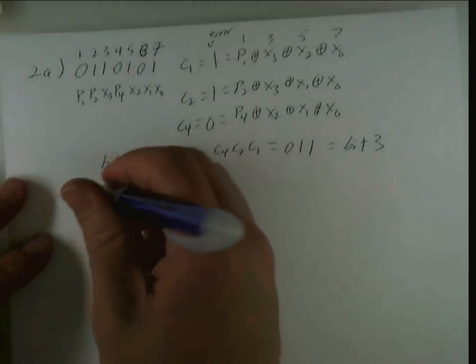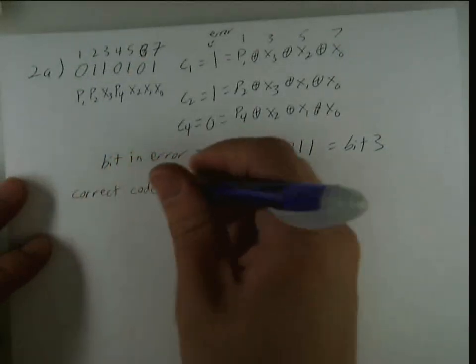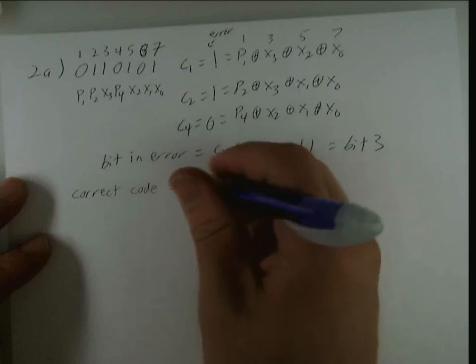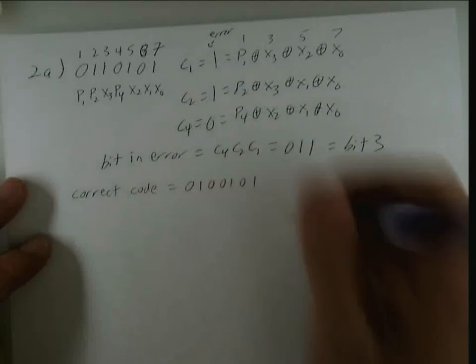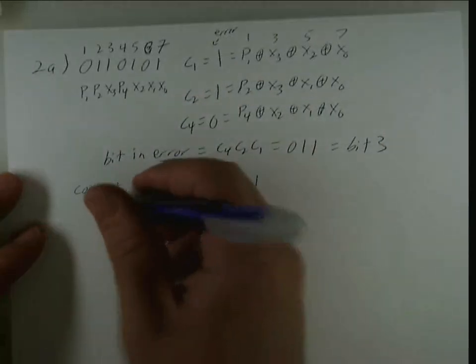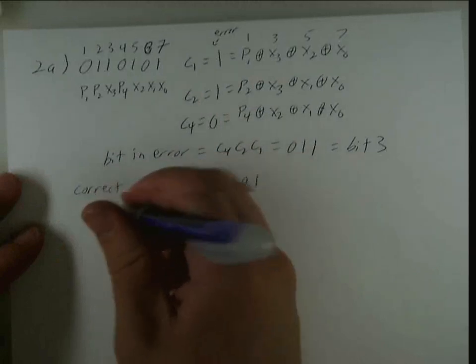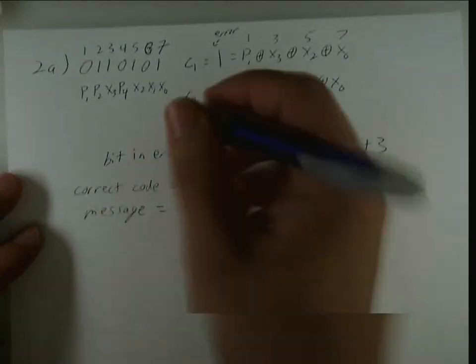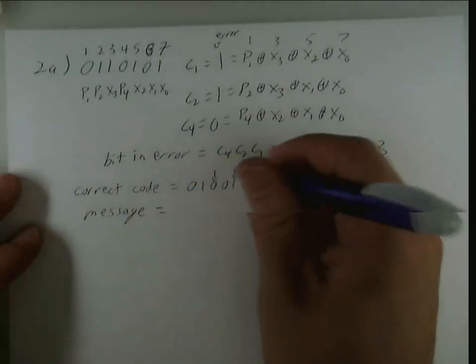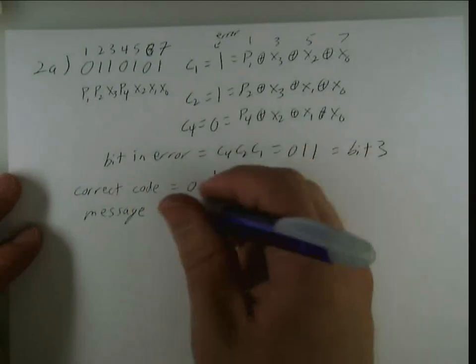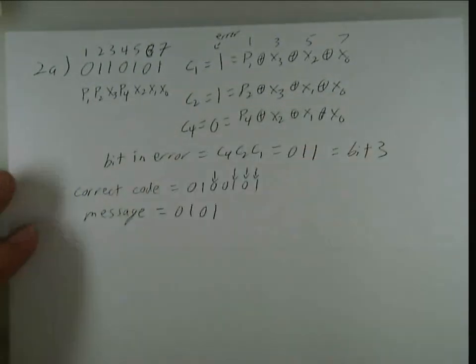So, correct code equals 0, 1, 0, 0, 1, 0, 1. And, message is going to equal this one, this one, this one, and this one. So, 0, 1, 0, 1. And, that's all we need to do. And, now, I'll do one more on this video. And, then, I'll just write the rest, and you can look at that on the PDF.